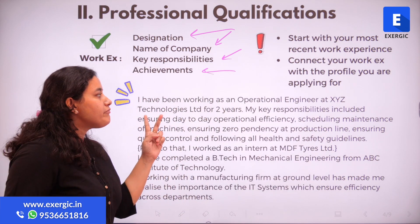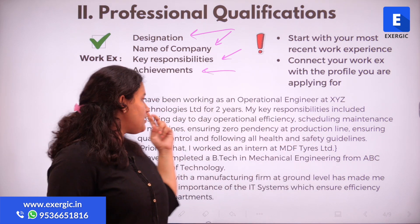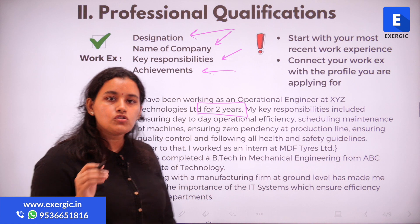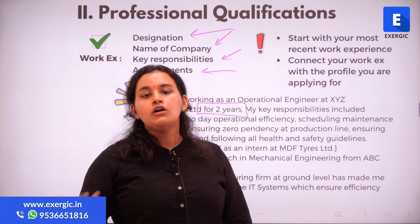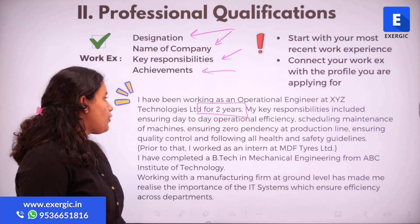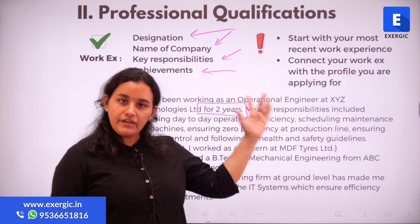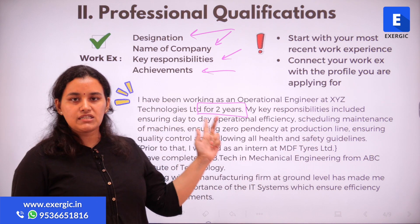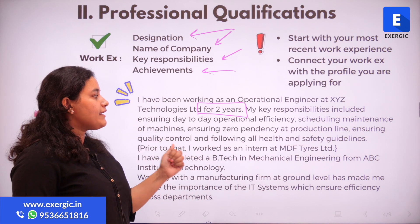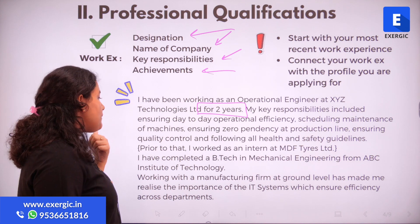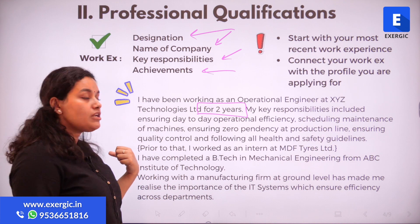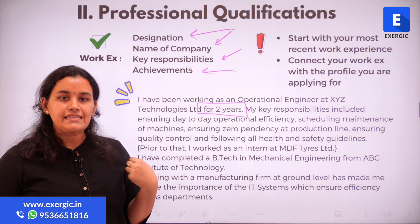Let's look at this sample: 'I have been working as an operational engineer at XYZ Technologies for two years.' The tenure is very important — say how long, like 'for two years' or 'since 2019.' 'My key responsibilities included ensuring day-to-day operational efficiency, scheduling maintenance of machines, ensuring zero pendency at the production line, ensuring quality control, and following all health and safety guidelines.'